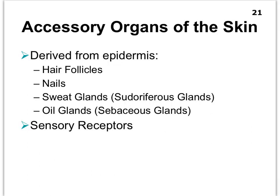Remember that the integumentary system consists of the skin and accessory organs, and they include your hair follicles, the nails, our sweat glands — which have a fancier name, sudoriferous glands — and the oil glands, also called the sebaceous glands. These are all derived embryologically from the epidermis, and they're mostly located in the dermis. On pictures and on slides, you'll see that they are located mostly in the dermis.